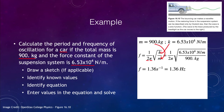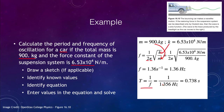To find the period, the period is just equal to 1 over the frequency. We don't have to go back to the equation T = 2π√(m/k) — we can simply invert the frequency and find that it is 0.738 seconds. If you wish to verify, go ahead and do that calculation using the original equation and you should still get 0.738 seconds for the period.